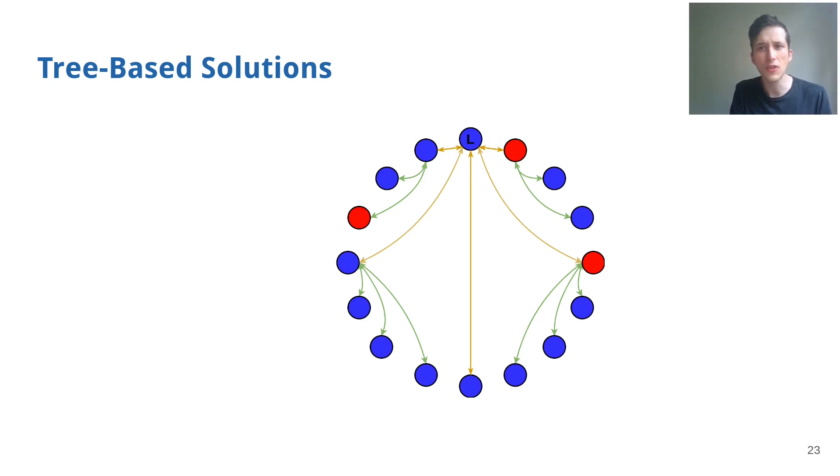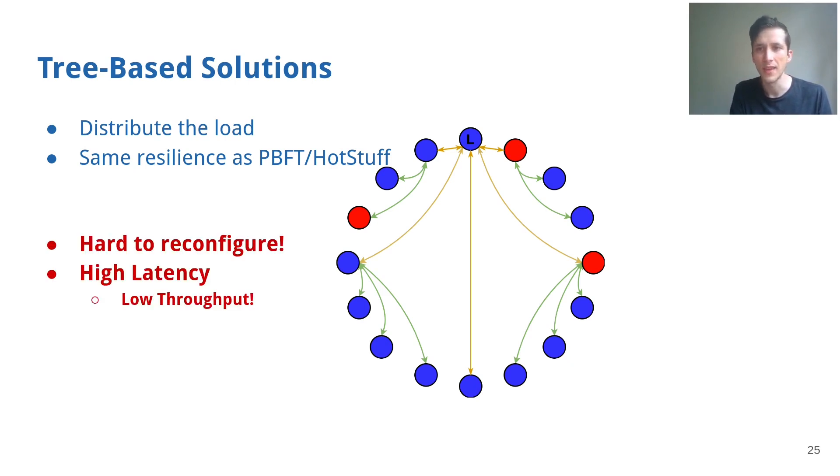A solution that solves all of these problems are tree-based approaches, where votes are disseminated and aggregated through a tree. This way, distributing the load equally among the internal nodes, while maintaining the same resilience as pBFT and HotStuff. However, trees are hard to reconfigure.